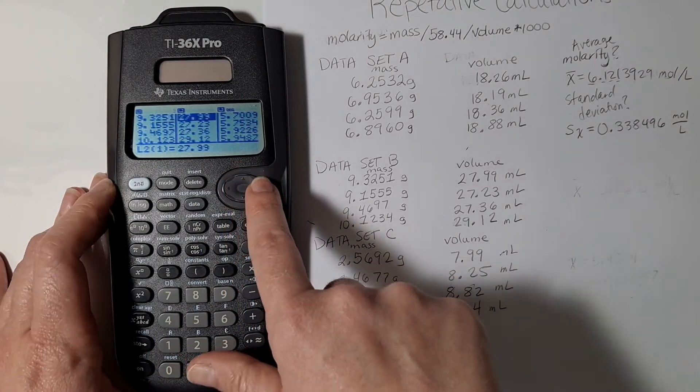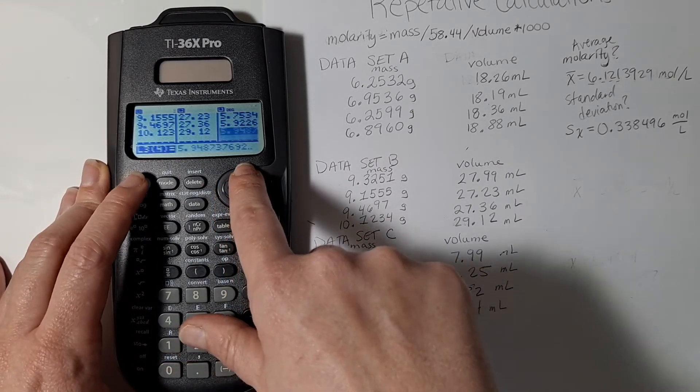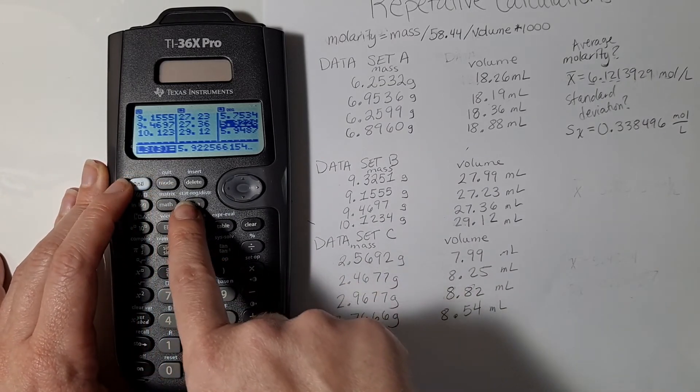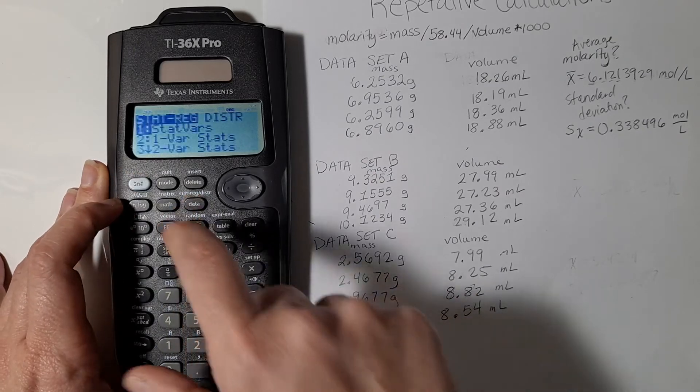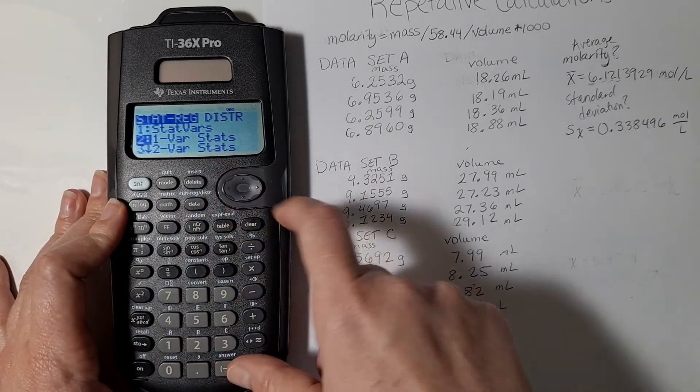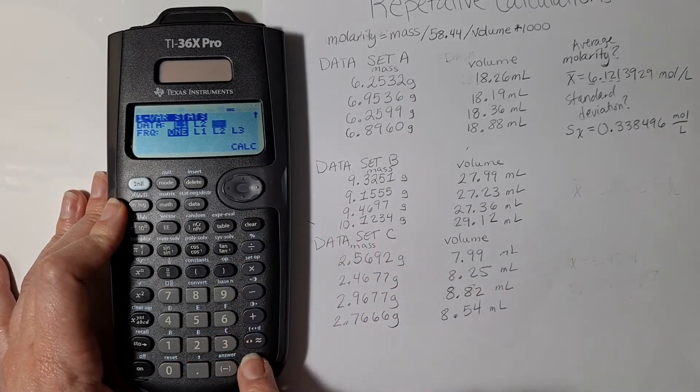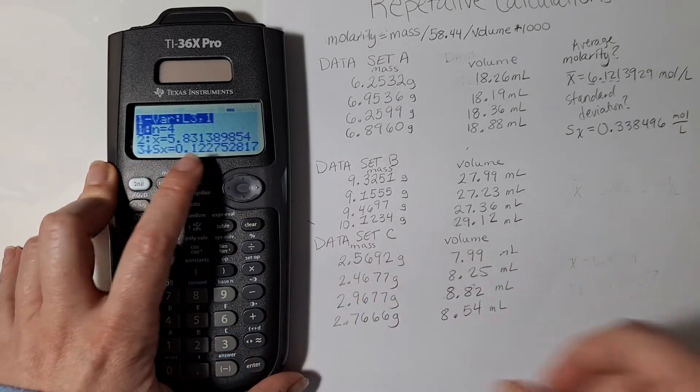Now it has recalculated my molarity and I can see that they're all in that 5.7 to 5.9 range. Now I can go second quit or straight into the one variable statistics, scroll down to list two again, scroll over to list three which is where my molarities are, then I can go down here to calculate.